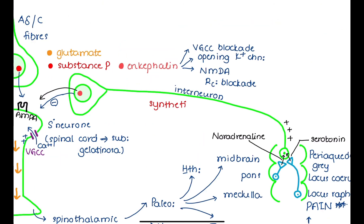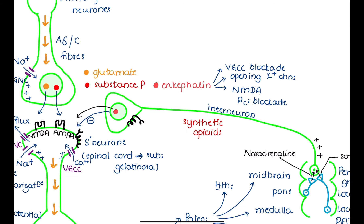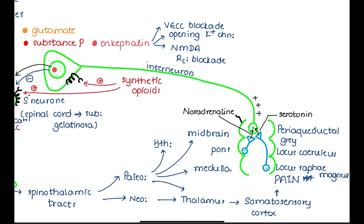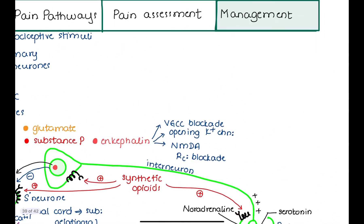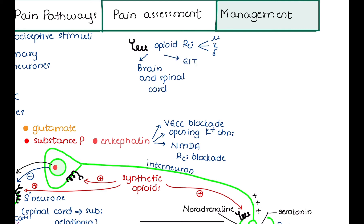After studying endogenous opiates, let's learn about synthetic exogenous opiates. Synthetic opiates perform the same action as endogenous opiates and act on opioid receptors, especially in the spinal cord and brainstem. There are three major types of opioid receptors: Mu, Kappa, and Delta. These receptors are distributed in the brain, spinal cord, and GI tract, which is why activation causes GI side effects such as nausea and vomiting. High doses of opioid drugs inhibit the respiratory center in the brain, causing respiratory depression, which can lead to hypoxic brain injury and even death.